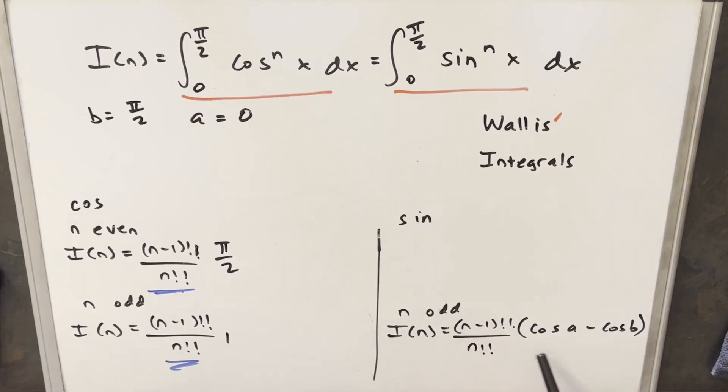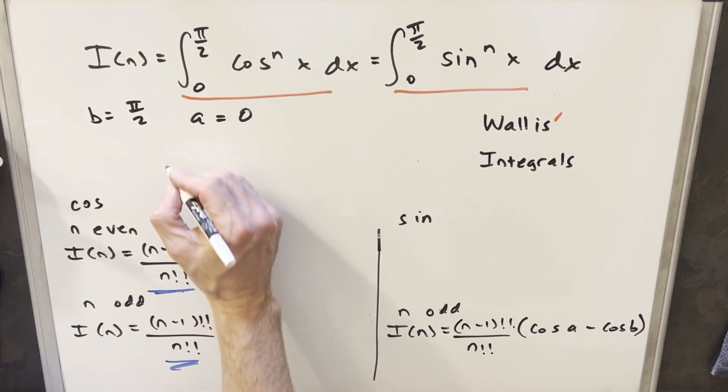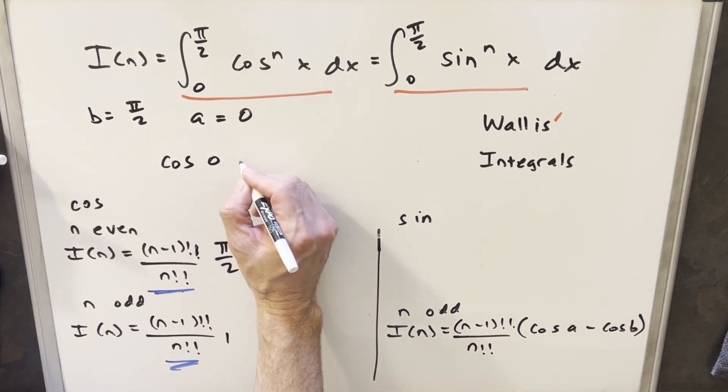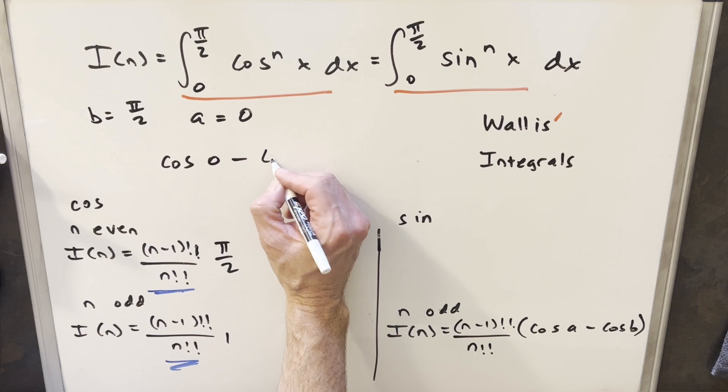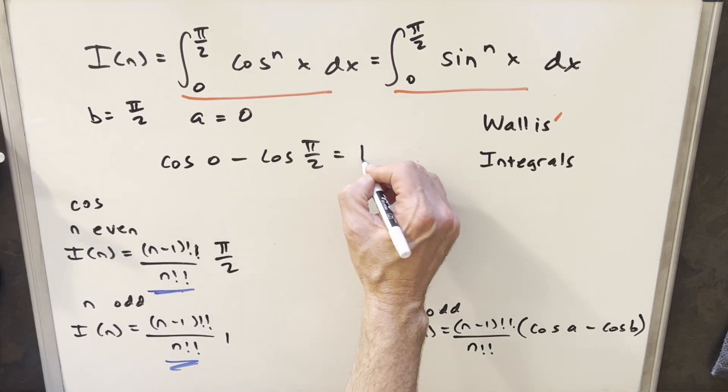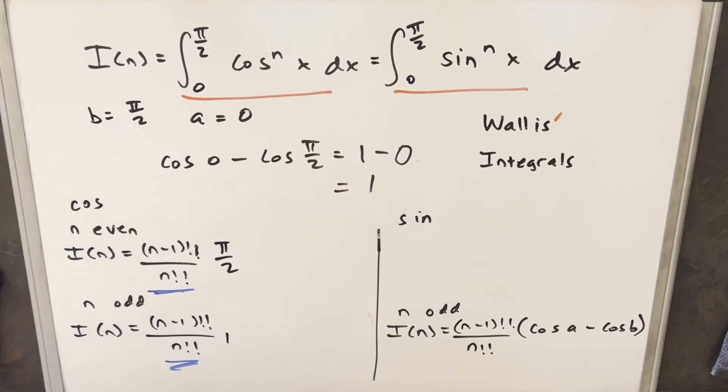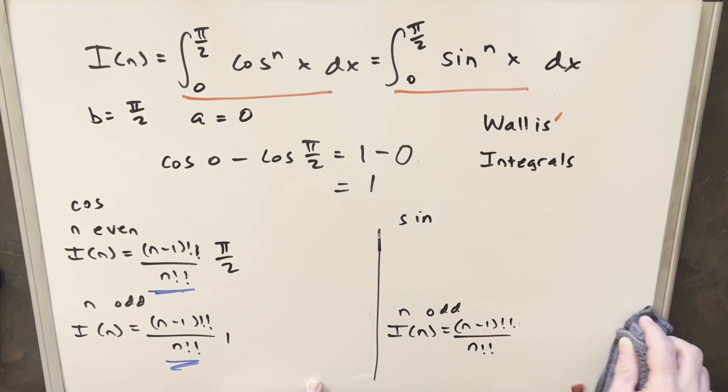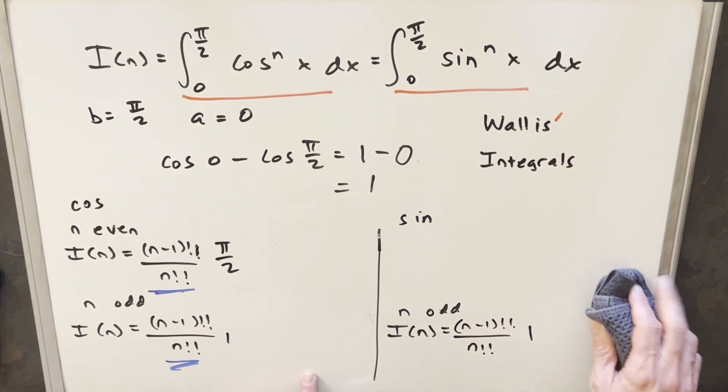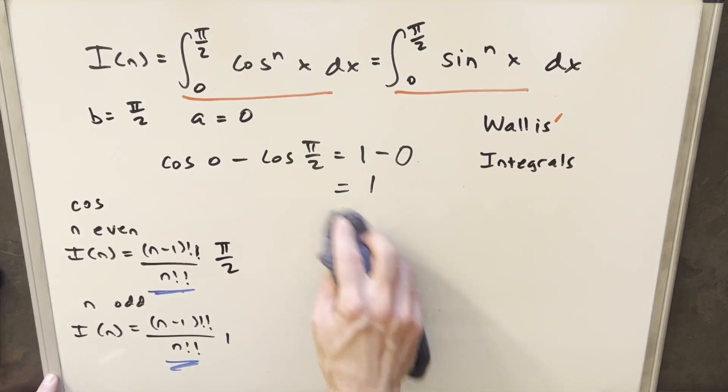Now let's just do the exact same thing for our odd case for sine. Even though we know they're going to be the same thing, they should be the same thing, right, if this is going to work. But let's just do it just to see that it works. So we're going to have here cosine of a. So this is going to be cosine of 0 minus cosine of b, which is going to be π over 2. Cosine of 0 is just 1, minus cosine of π over 2 is 0. And so again, this is just 1. So I'm going to write this in here. But again, this is the exact same thing. So we don't even need this separate set of values. So let's just erase this now that we know that this works.